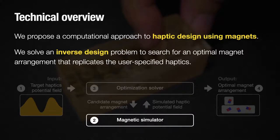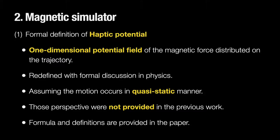In the magnetic simulator, we have three contributions. The first one is the formula definition of haptic potential. This is defined as the potential field of a magnetic force distributed on the trajectory. Also, we define them with formal discussion in physics, assuming that the motion occurs in a quasi-static manner. Those perspectives were not provided in the previous work. Please check them on the paper.